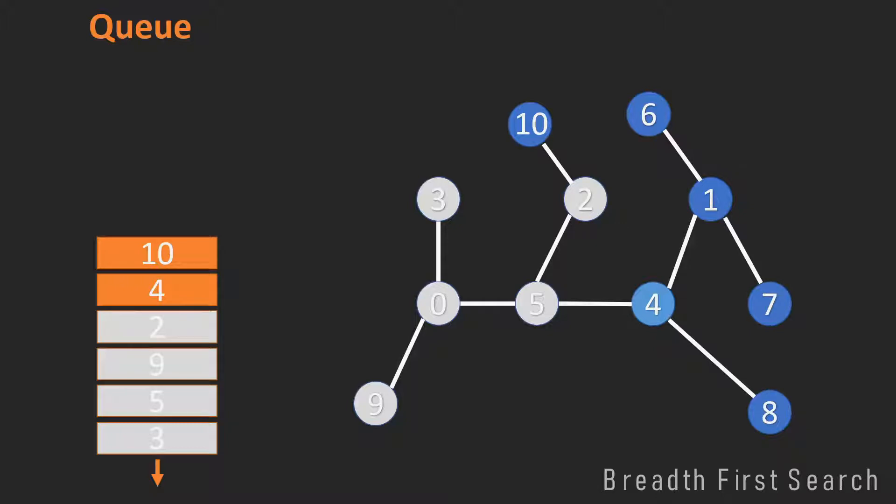Now you will probably have a feeling about what comes next. So we again look at the first element in the queue, which is the 4, we visit the 4, put all its unvisited neighbors, in this case 1 and 8, in the queue, and mark 4 as visited.